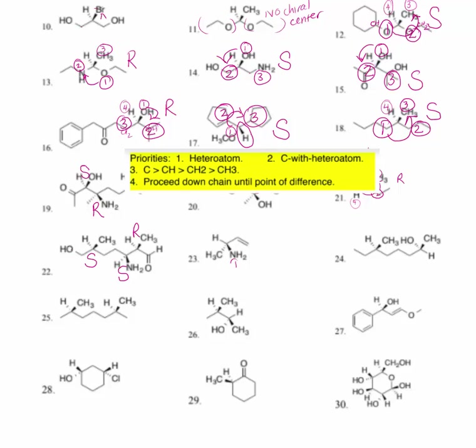For number twenty-three: nitrogen is first, hydrogen is number four. The CH over here is going to be number two, and the methyl group is priority number three. You have to push that hydrogen to the rear and look at the rotation coming up through the molecule. This rotates clockwise, making this an R configuration.